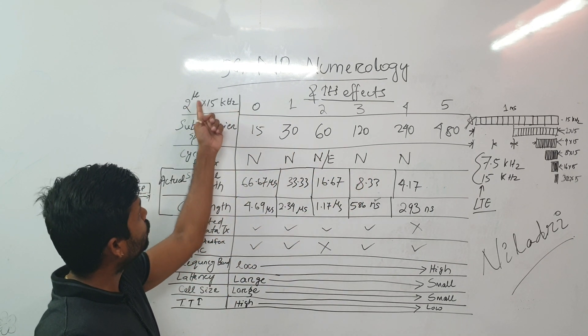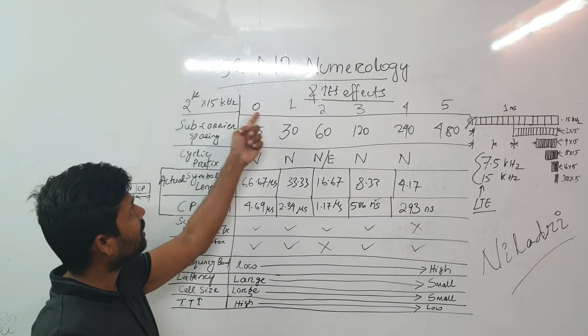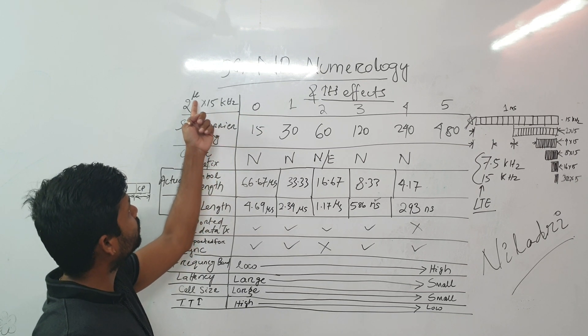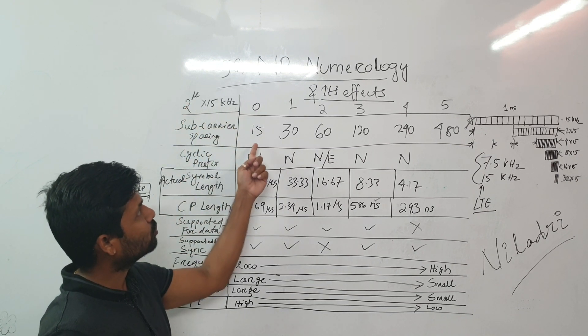So with 2 to the power mu into 15, if we implement this formula where the mu value is 0 and it would be 2 to the power mu 0 means 1 into 15. So it would be 15.